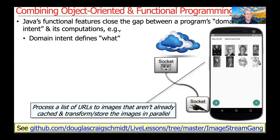Domain intent fundamentally focuses on the what. There's a nice example you can find in my GitHub repository called the ImageStreamGang program. Its domain intent is to process a list of URLs given by users through a GUI. These URLs point to images that aren't already cached. The ones not already cached will be downloaded, transformed by image processing, and stored locally on the computing device — all in parallel. So that's the what.